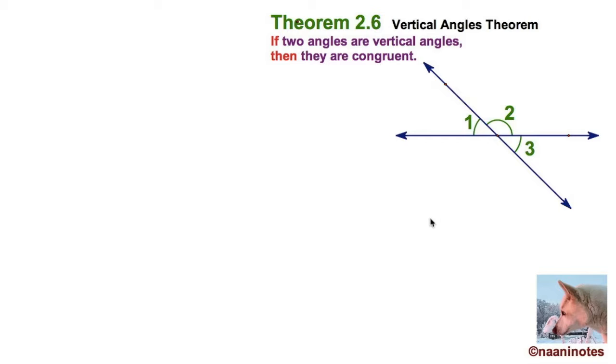You'll just use this theorem. And then you'll say from that, I have angle 1 and 3, I have this diagram given. 1 is congruent to 3, because two angles that are vertical are congruent.